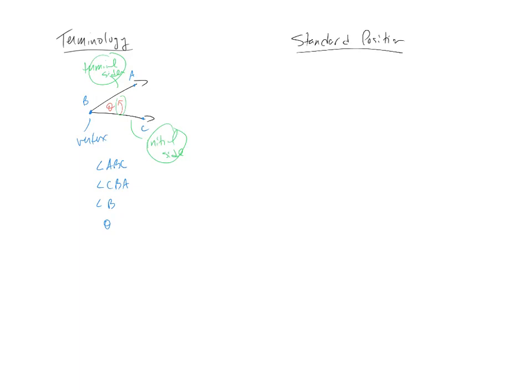So an angle in standard position has two things. The vertex is at the origin, and the initial side is on the positive x-axis. So if I draw a picture here, there's my x-axis, there's my y-axis. An angle in standard position, we might have our initial side right here on the positive x-axis.